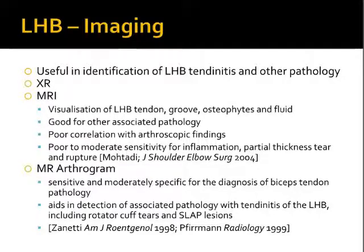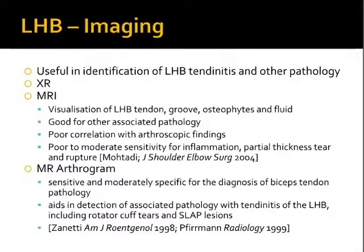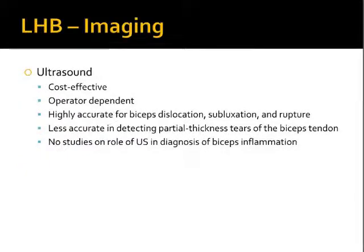There is a poor correlation between what is seen of the biceps tendon on MRI and what is seen at arthroscopy, and there seems to be poor to moderate sensitivity for inflammation or partial tears of the tendon. MR arthrogram can also aid in diagnosis of other problems. Ultrasound is a relatively cost-effective method of interrogating the long head of biceps but is quite operator-dependent. It's good for diagnosing dislocation from the groove as well as subluxation and rupture, but is less accurate detecting partial-thickness tears, and there are no studies looking at ultrasound in the diagnosis of biceps inflammation.